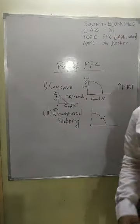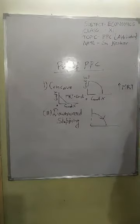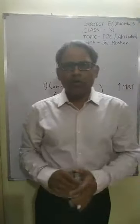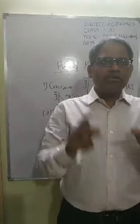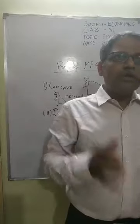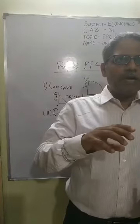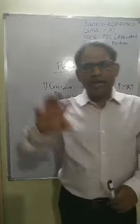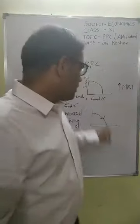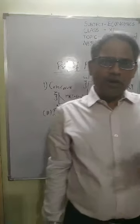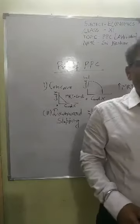The second property is: PPC is downward sloping. The reason is that a producer cannot increase production of both goods simultaneously. Because resources are scarce and limited, the producer has to sacrifice some units of one commodity in order to produce an additional unit of the other. So whenever a producer wants to increase production of one commodity, he must decrease production of the other.